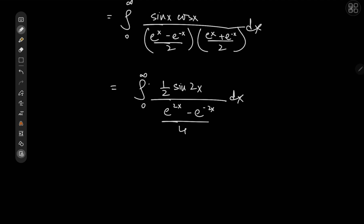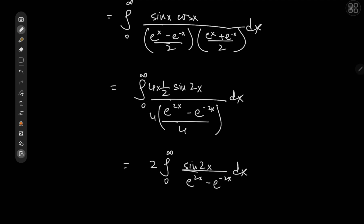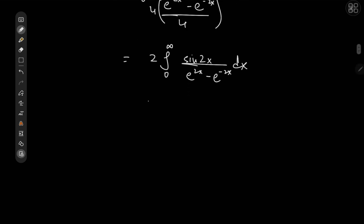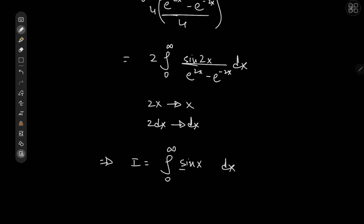Expanding by four to cancel the four in the denominator, we get twice the integral from zero to infinity of sine 2x over (e^{2x} minus e^{-2x}) dx. Then applying the substitution from the 2x realm to the x realm — two dx becomes dx — we arrive at the integral from zero to infinity of sine x over (e^x minus e^{-x}) dx.